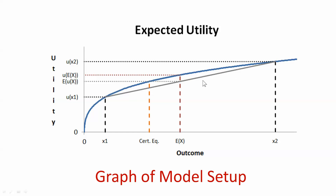There is a chord between the two points (x1, u(x1)) and (x2, u(x2)) — that chord is the gray segment. The function lies above the chord; that is a defining property of concave functions. What we want to show, indicated in the diagram, is that if you go from the expectation of x up to the chord, that value is the expected utility of the gamble. We'll come back to the certainty equivalent point at the end.